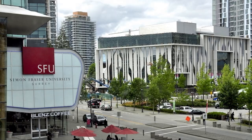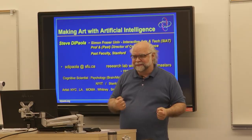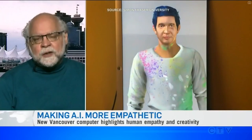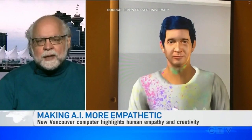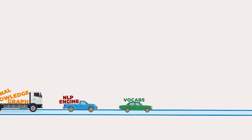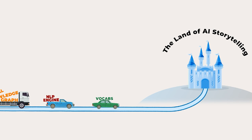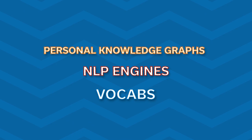It takes years and years of effort to develop significant AI. We started working five years ago with Dr. Steve DePaola, developing an AI storytelling concept that is coming to fruition by phase 3 of our business. Instagate's three-phase strategy leads to the point where our AI storytelling technology can be deployed. That technology is built on the foundation of Personal Knowledge Graphs, NLP Engines, and what we call vocabs.